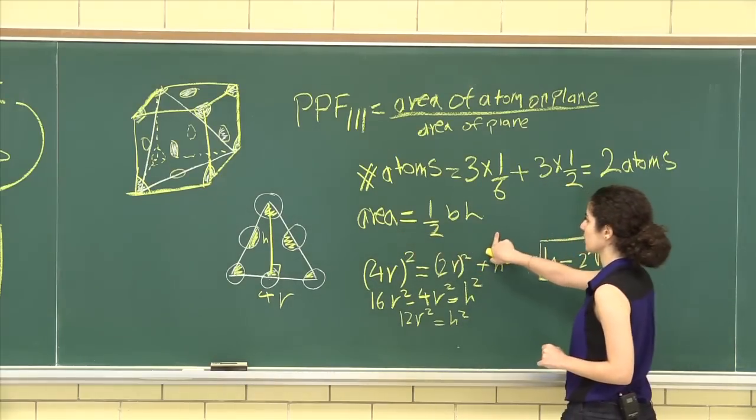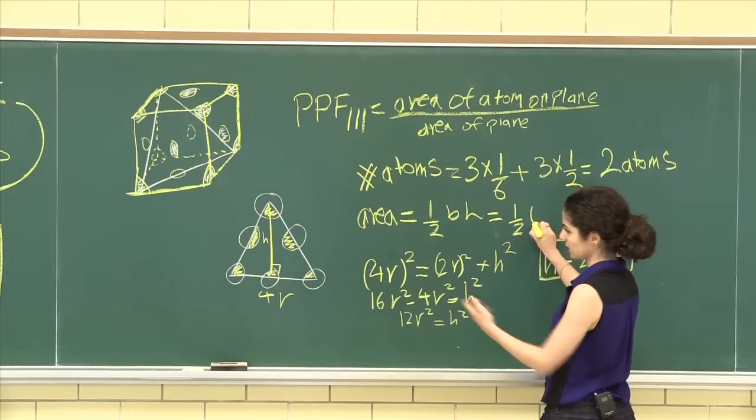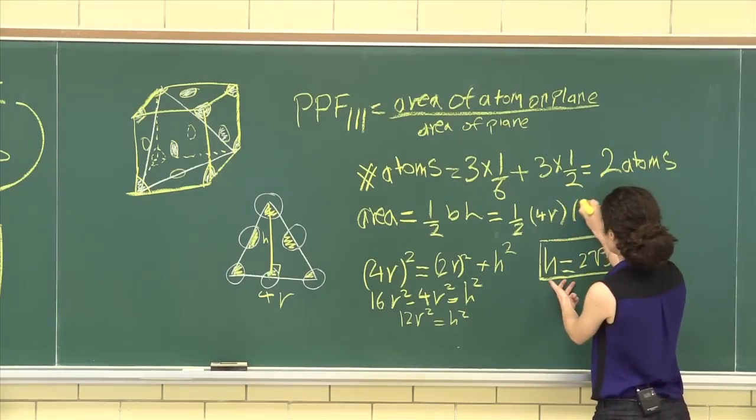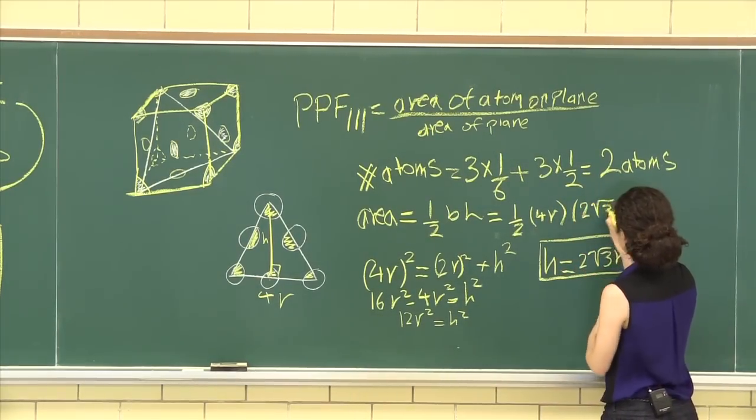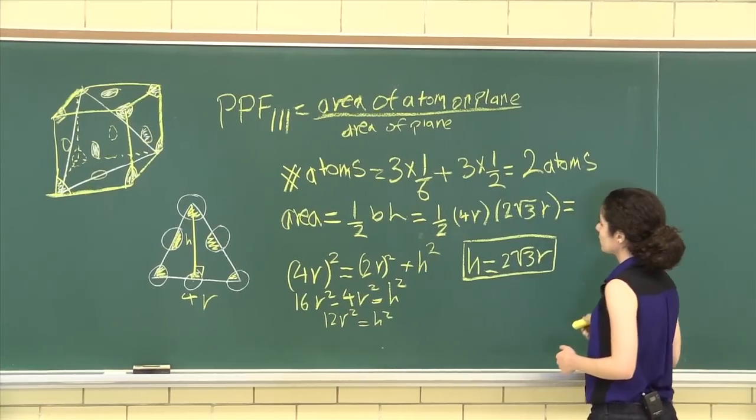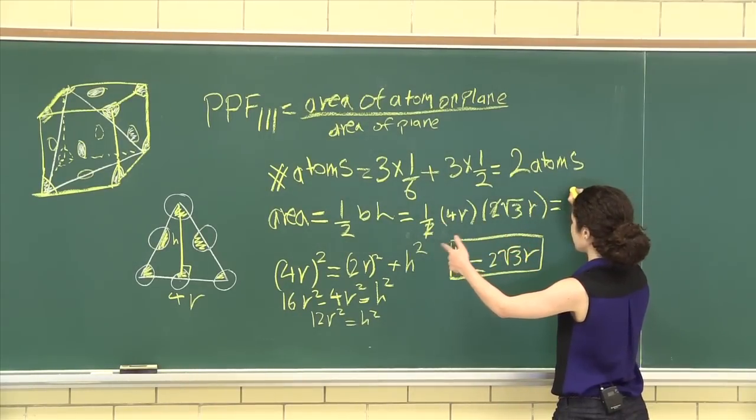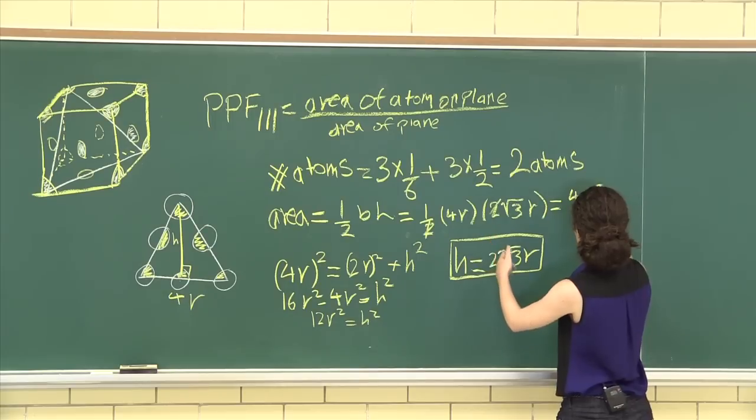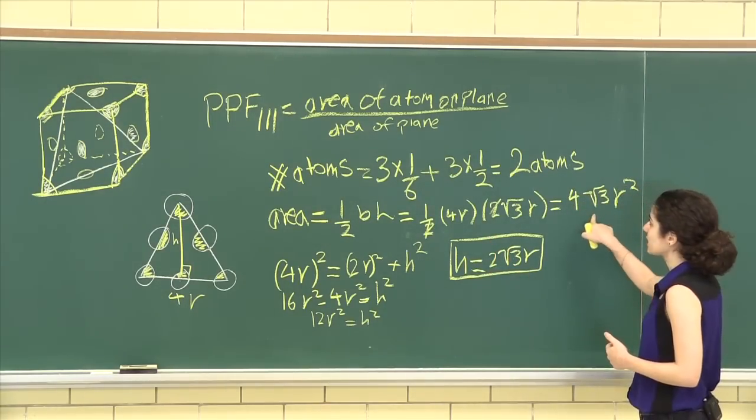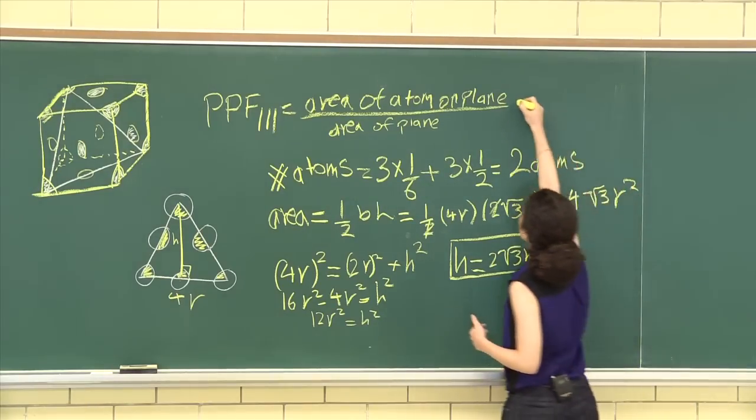Let's continue with this formula here. We have half of the base, our base was 4r, times the height 2 root 3r. So we have our area of the plane as 4 root 3r squared.